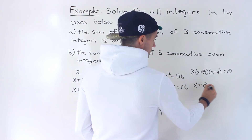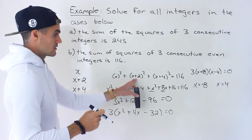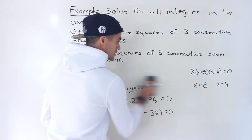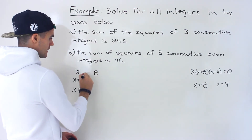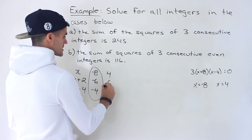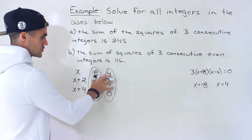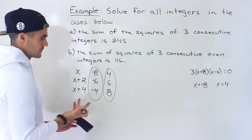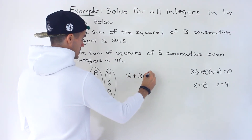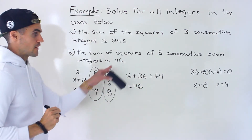So x equals negative 8 or x equals 4. Again, two sets of solutions because squaring makes values positive. If x is negative 8: negative 8, negative 6, negative 4. If x is 4: 4, 6, and 8. When we square them — 4 squared is 16, 6 squared is 36, 8 squared is 64 — adding these gives 116, confirming the answer.